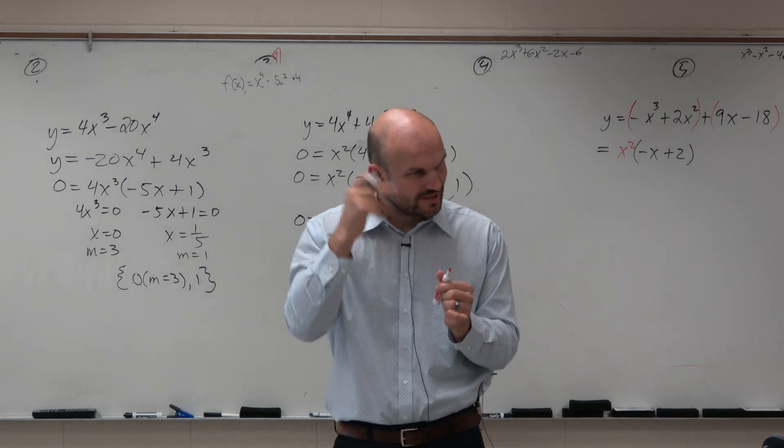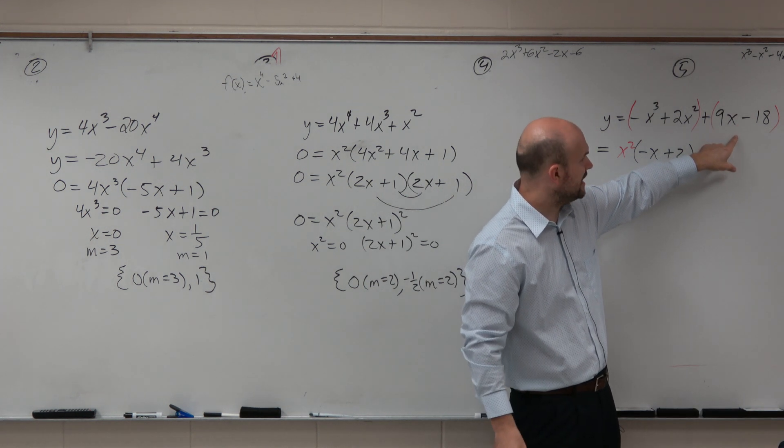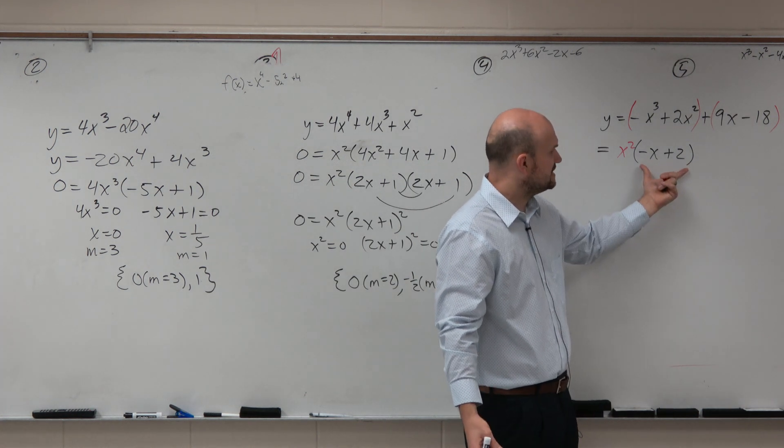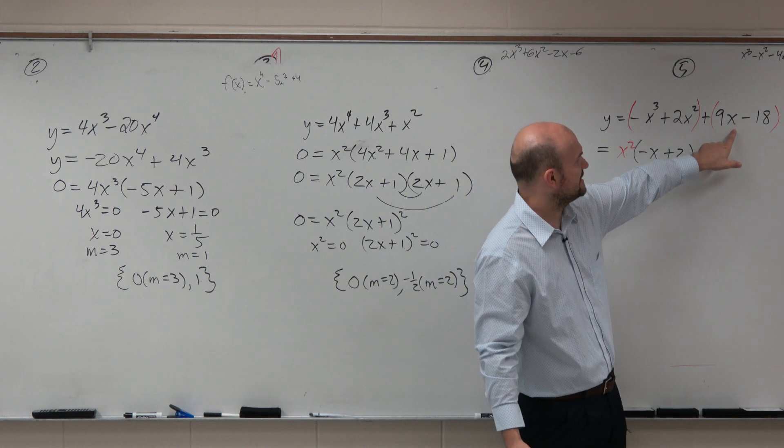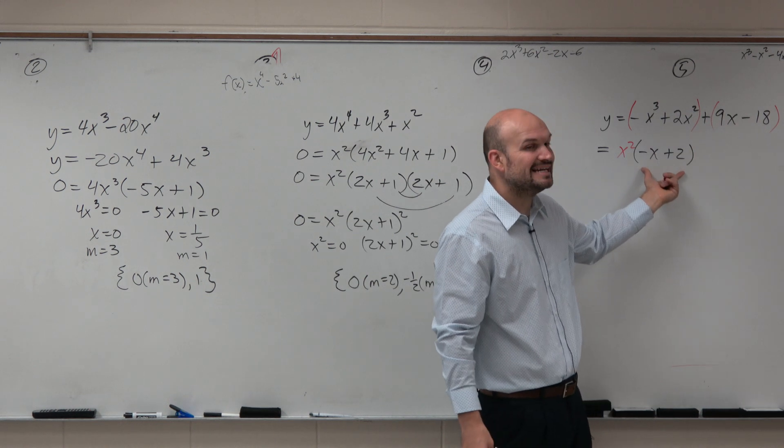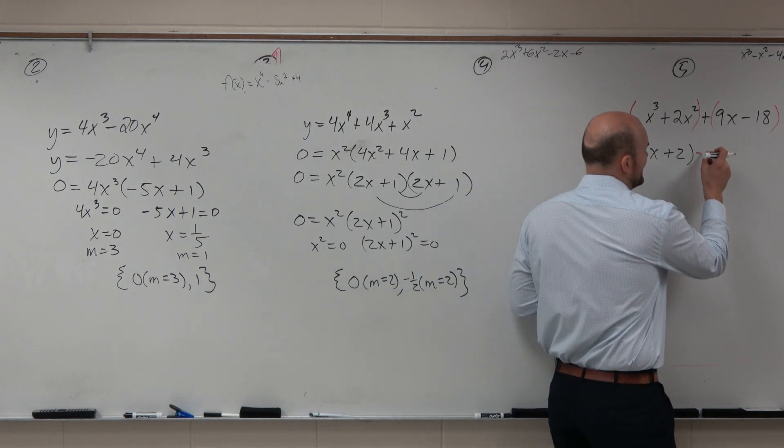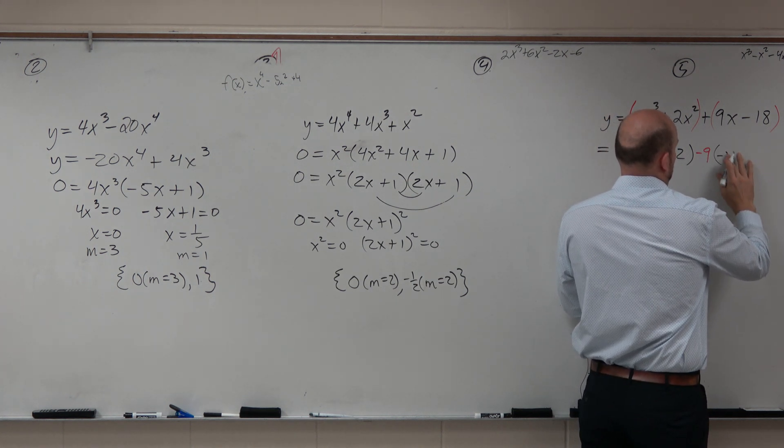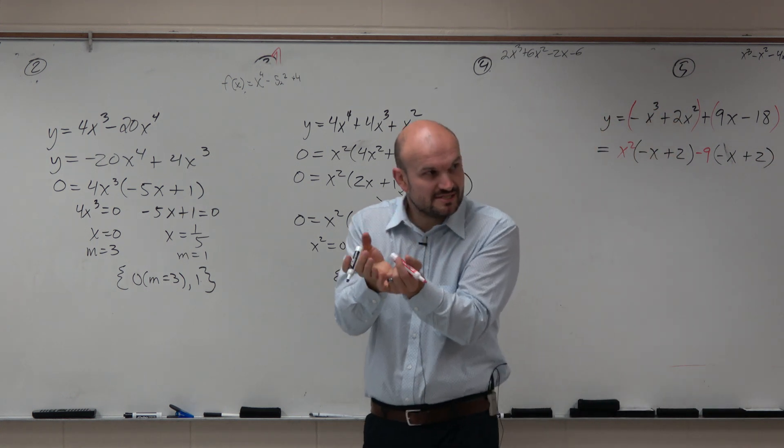Now, here's the kind of kicker, though. Here's the thing you need to think about when doing this. You could factor this out, you could factor out a 9, agreed? But the purpose, what you want, is you want whatever's inside these black parentheses to be exactly the same. So if I factor out a 9, I'm going to get an x - 2. I don't want an x - 2. I want it to be a -x + 2. So instead of factoring out a 9, what should I factor out? -9. So you just kind of got to be a little bit smarter than sometimes the problem.